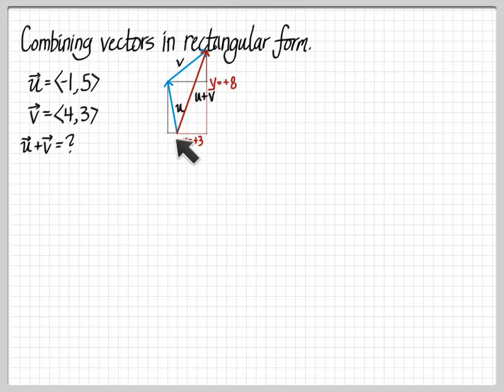But of course the x component is plus three, because we went one left, and then four right. So it's like negative one, and then plus four. And then the y component is plus eight, because we went five up, and then we went three more up. And so the obvious thing to do to add vectors is what's actually correct. If I want to add vector u and vector v, and I have their component form here, I just add the x's, and I add the y's. It's as simple as that. So u plus v is the x component is negative one plus four, the y component is five plus three, and so u plus v is the vector three comma eight. Very straightforward.